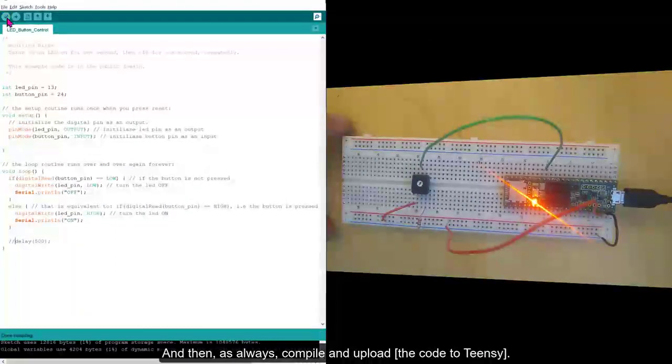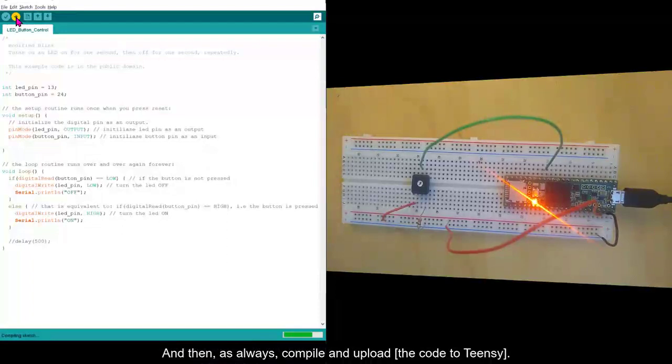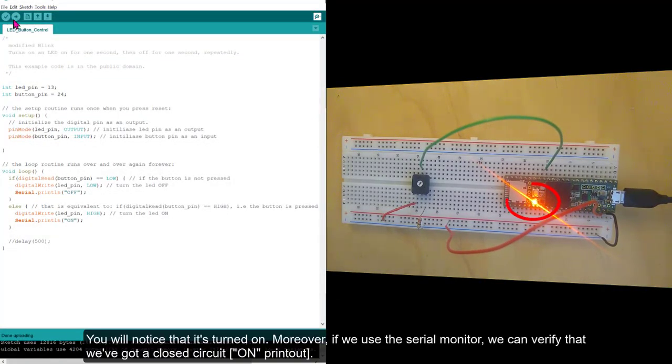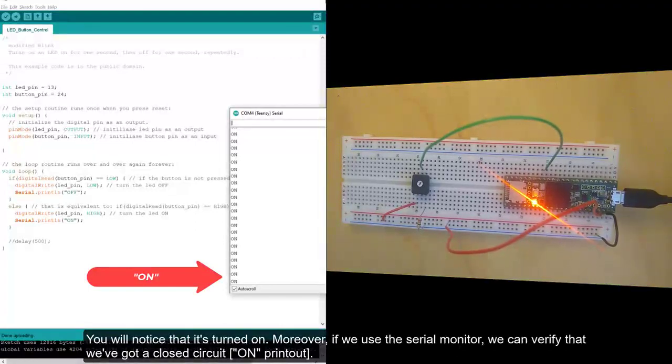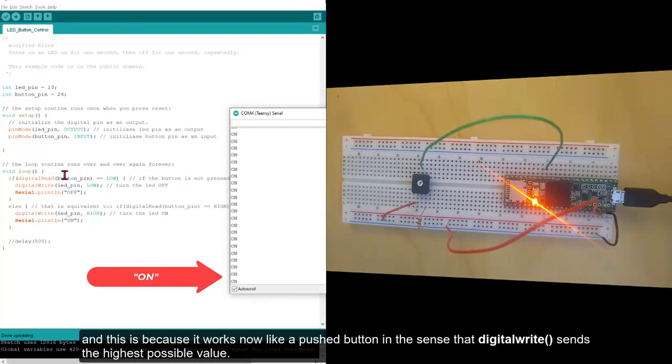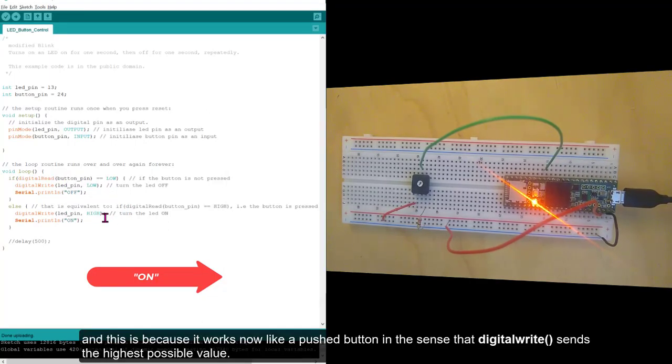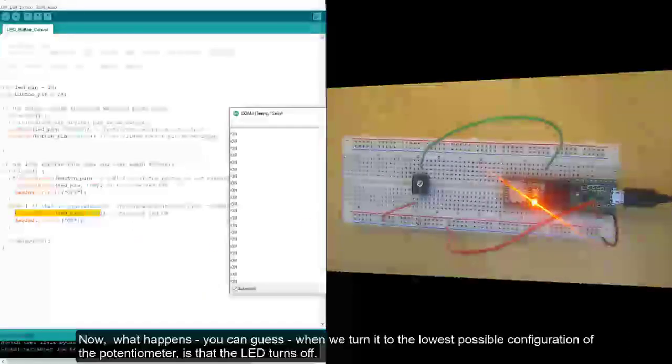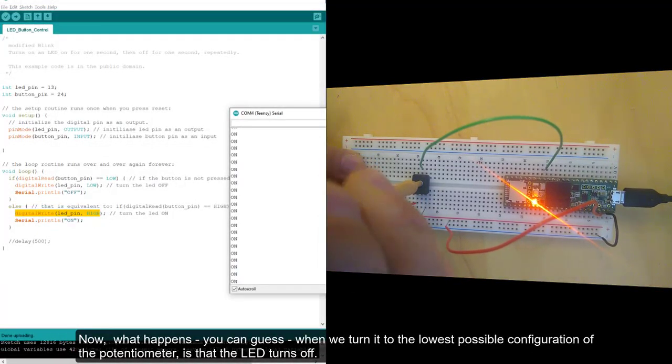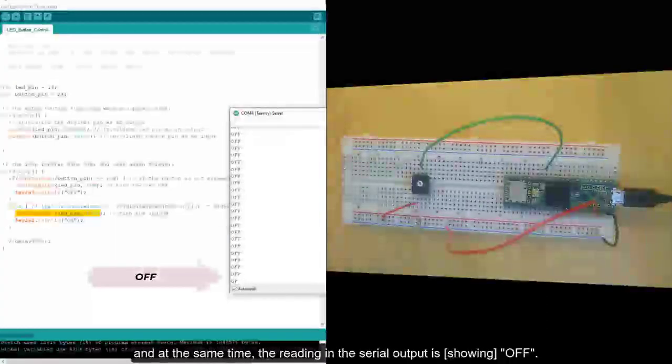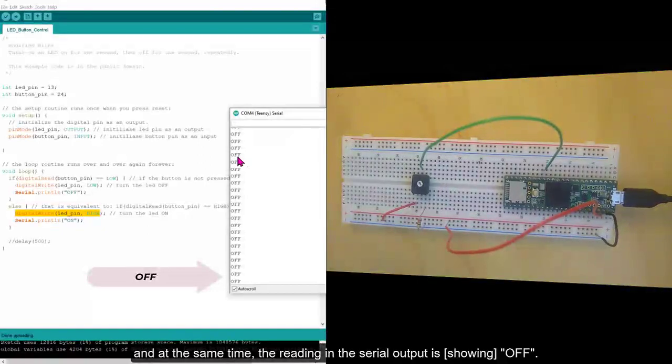And then, as always, compile it and upload it. You will notice that it's turned on. Moreover, if we use the serial monitor, we can verify that we've got a closed circuit. And this is because it works right now like a pushed button, in the sense that digital write sends the highest possible value. Now, what happens, you can guess, when we turn it to the lowest possible configuration of the potentiometer, is that the LED turns off. And at the same time, you see that the readings on the serial output is off.